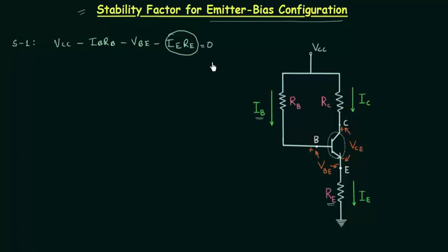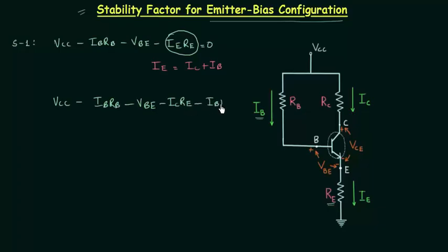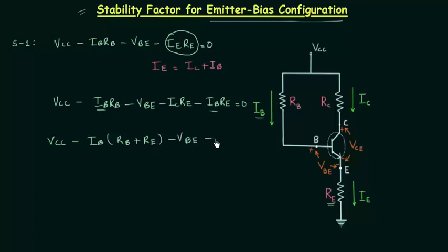We will use this equation to find out base current, but first we will replace IE, the emitter current, with IC plus IB. So we have: VCC minus IB·RB minus VBE minus IC·RE minus IB·RE equal to zero. Taking IB common from two terms, we have: VCC minus IB(RB + RE) minus VBE minus IC·RE equal to zero.